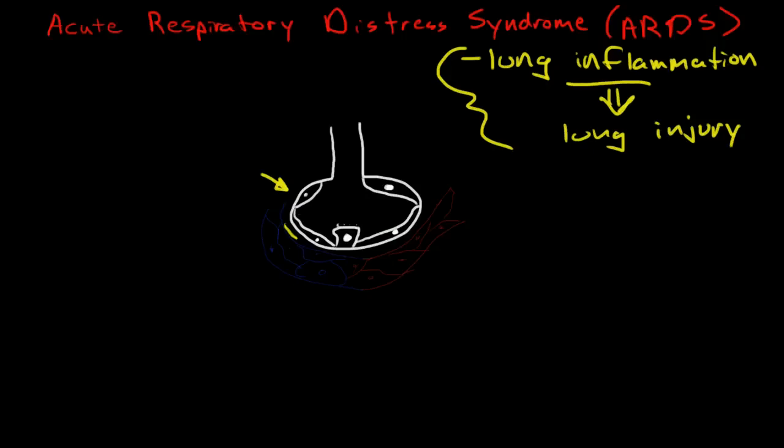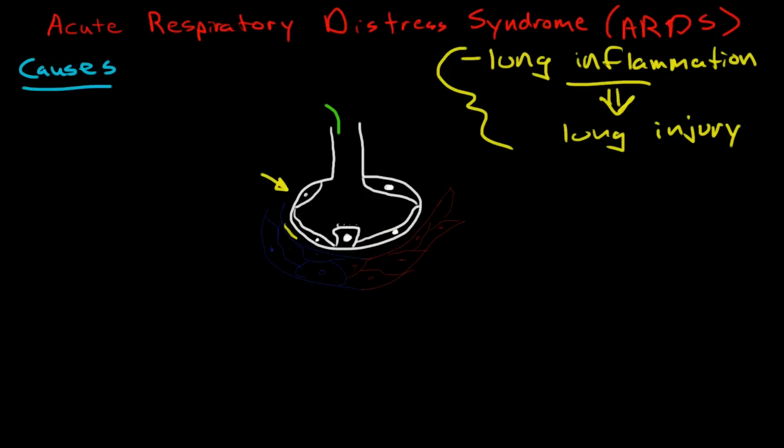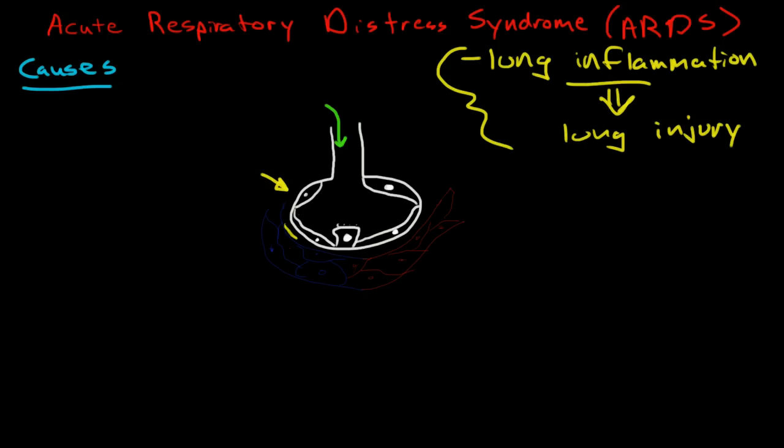Now it can be caused by a number of things, so causes or predisposing events. One possible cause is that there is injury to the alveoli. Now it could be injured by chemicals like smoke inhalation. It could be caused by severe burns to the tissue if the person was in a fire and breathed in hot gases. It can be caused by infection where we have bacteria and a buildup of pus with injury to the alveolar epithelium.